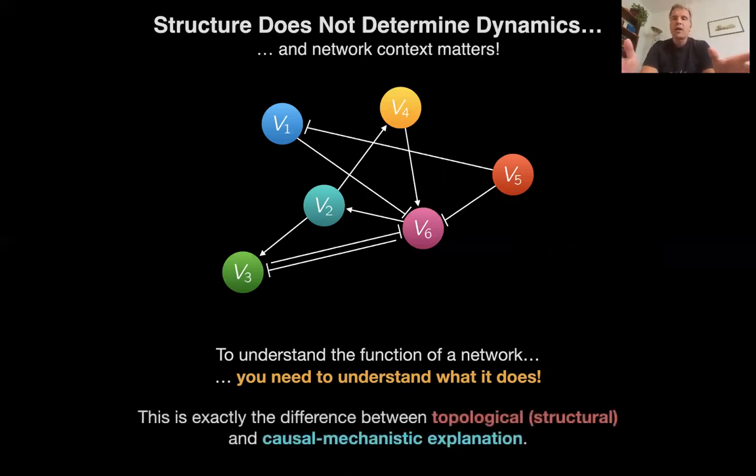So, what you need to do is you need to switch from one type of explanation of networks, the one that is based on graph theory. And that's been called topological because it's structural explanation, to a more causal, that is a mechanistic explanation. What does this network do? And I will tell you in the lecture that comes up next what I mean by mechanistic explanation. I hope you tune in again next time. And, as always, thanks for listening.